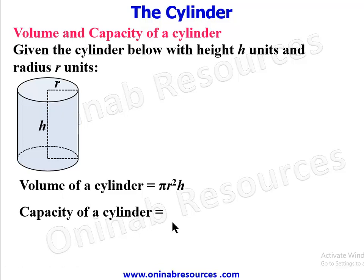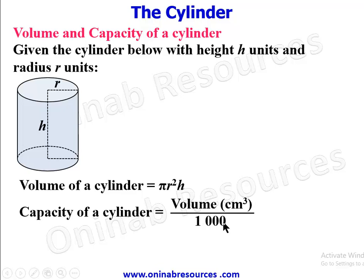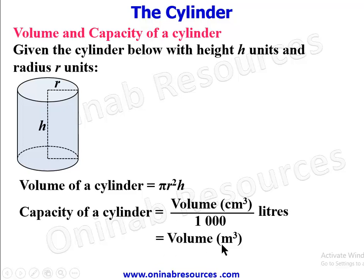For capacity: if the volume is measured in cubic centimeters, divide by 1000 to get liters, since 1000 cubic centimeters equals one liter. If the volume is given in cubic meters, multiply by 1000 to get liters.